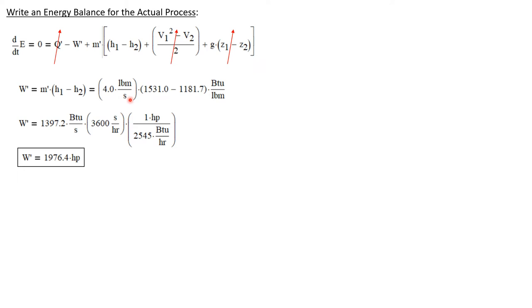All values were given in our table. We had a mass flow rate of 4 pounds mass per second, H1 of 1531 BTU/lbm, and H2 of 1181.7 BTU/lbm. Multiplying these together, the power output of the turbine is 1399.2 BTU/second. Converting to horsepower using 3600 seconds per hour and 2545 BTU/hour per horsepower, the power output is 1976.4 horsepower.